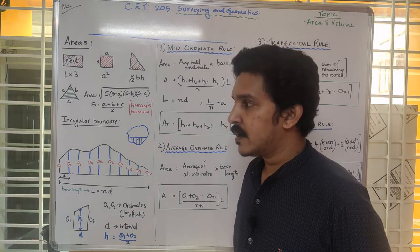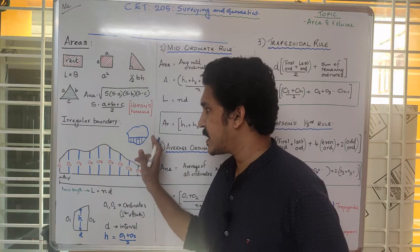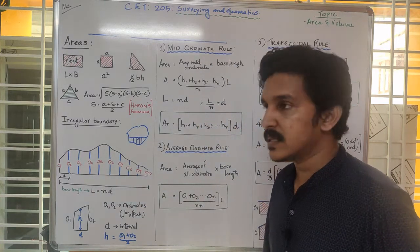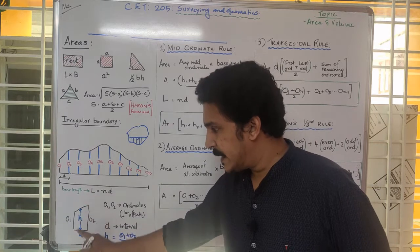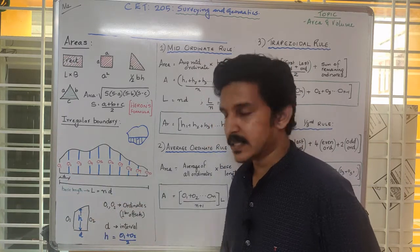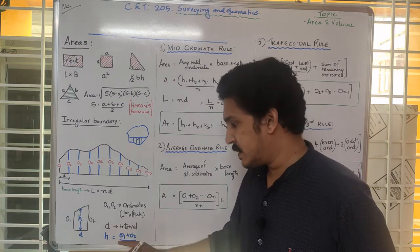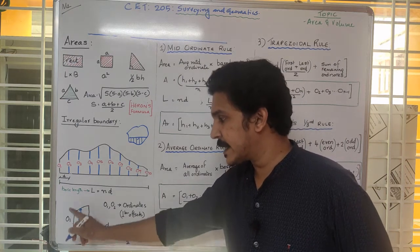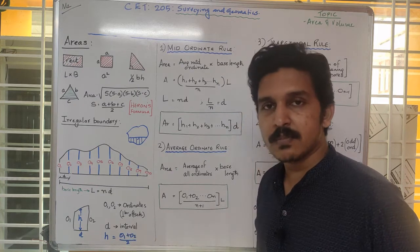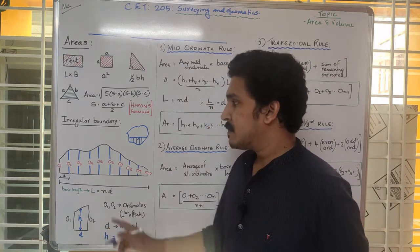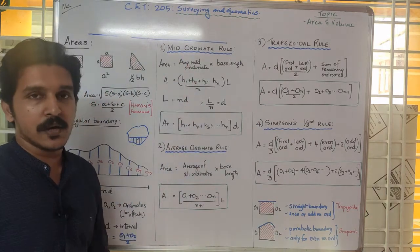The interval length is equal to dh, and the total base length is L, which equals n into d, where n is the number of intervals and d is the interval spacing. The mid-ordinate is the average of two adjacent ordinates: O1 plus O2 divided by 2, giving the in-between value. This leads us to the first formula for irregular boundary area — the mid-ordinate rule.